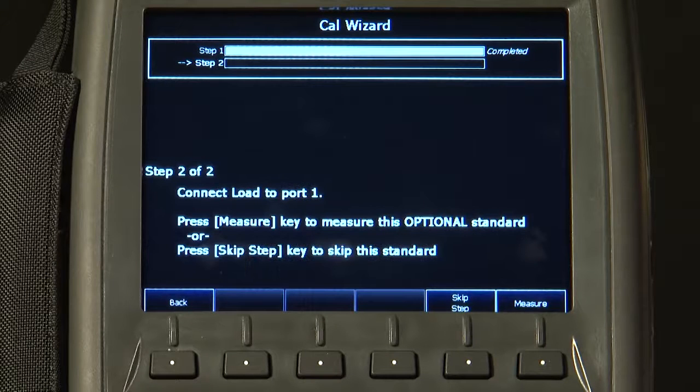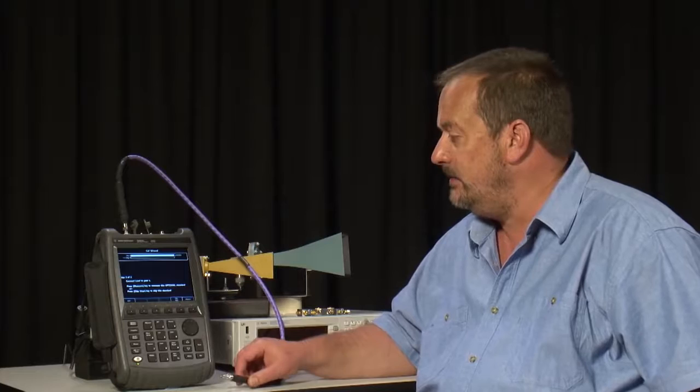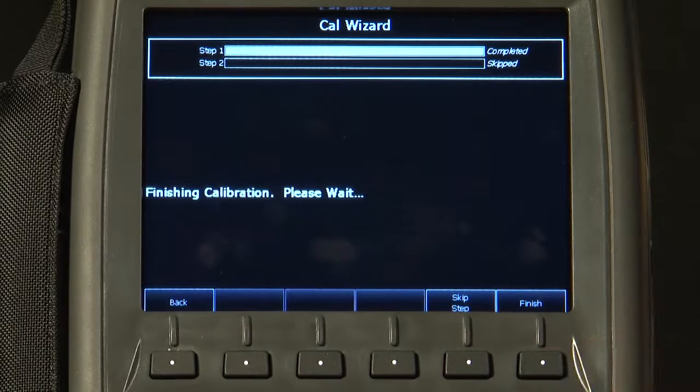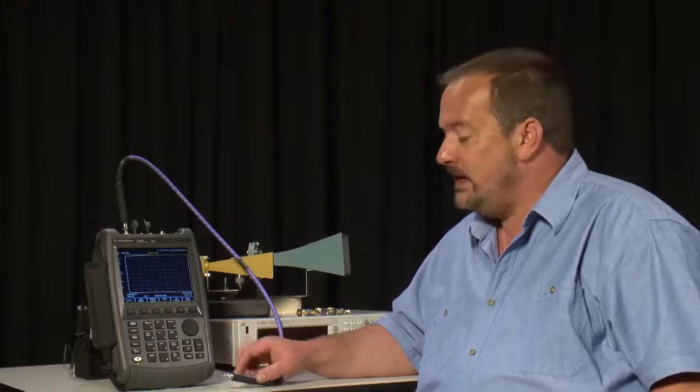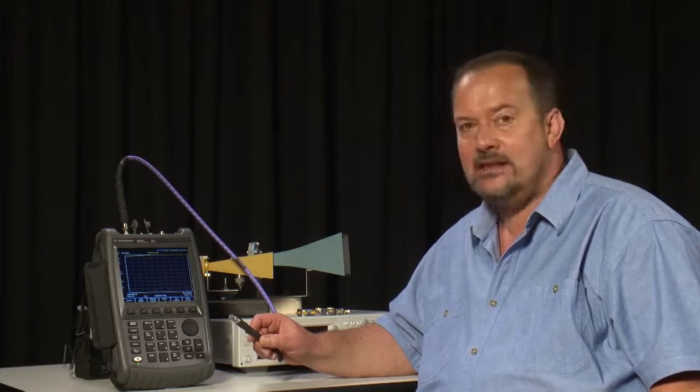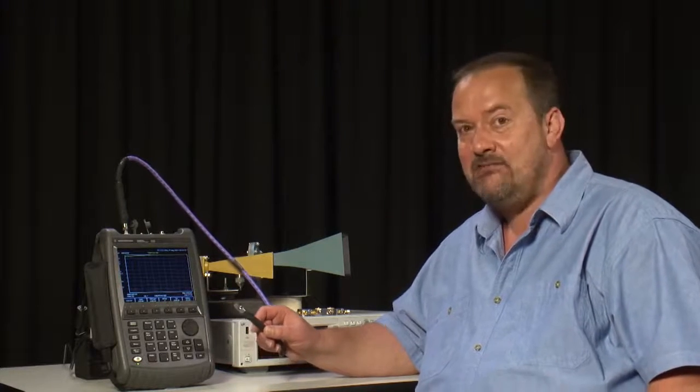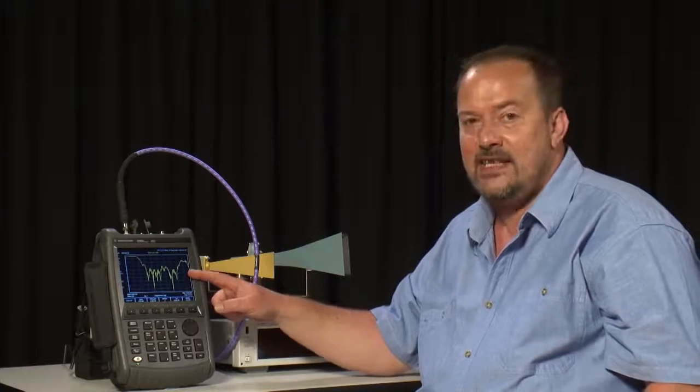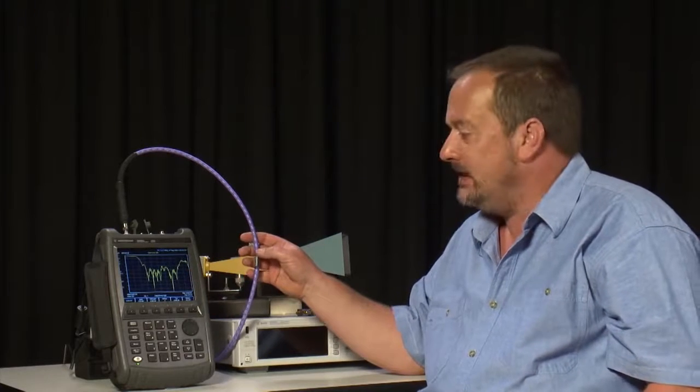And then it goes on to step 2, which is optional, which is to connect a 50 ohm load to the end of the cable. I will skip that step and press finish. And the FieldFox is now calibrated without using any mechanical calibration standards at all. I will now reconnect this to the antenna, and now we are measuring the return loss of the antenna without the effects of the test cable.